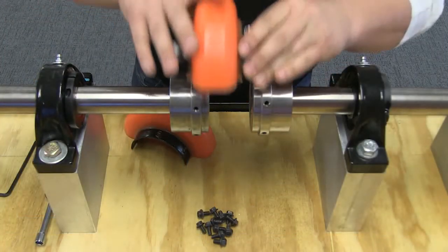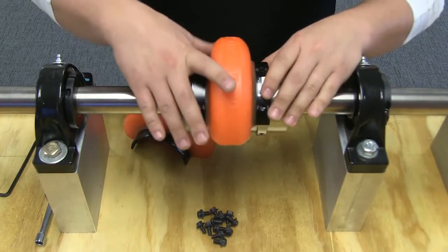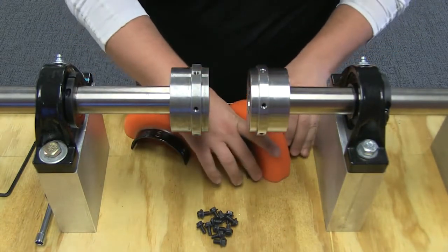Now that you have set your allowable shaft engagement using your element as your template, remove the element again so that you can check the alignment of your hubs.